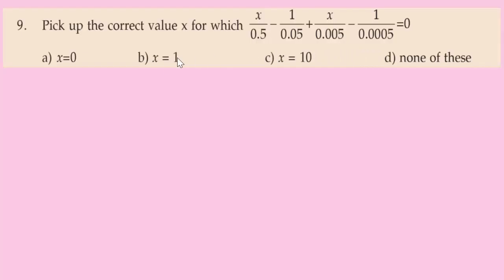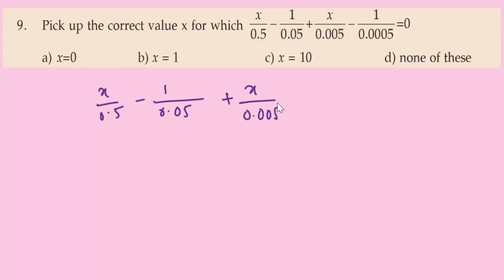Question number 9: pick the correct value of X for which X/0.5 - 1/0.05 + X/0.005 - 1/0.0005 = 0. Options are 0, 1, 10, none of these. The denominators are 0.5, 0.05, 0.005, and 0.0005.